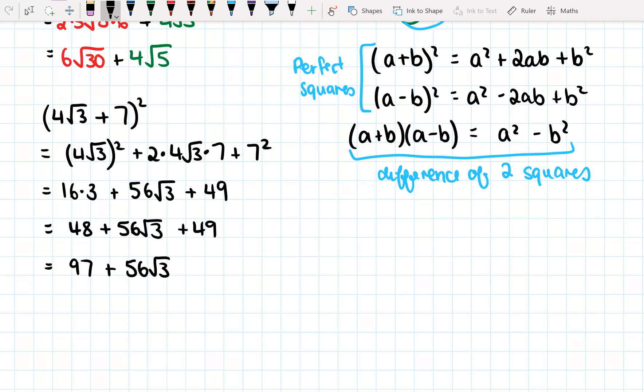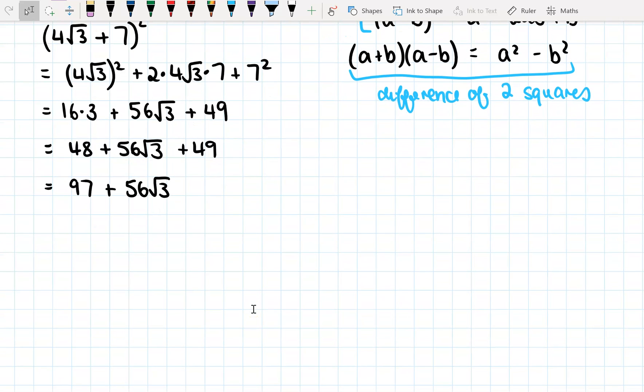Alright, a difference of two squares one is even easier. So if we have, for example, (2√7 + 6)(2√7 - 6). Okay, this gives us, firstly, a². So (2√7)² and then minus b², 6².